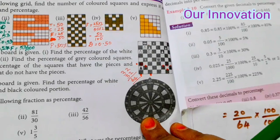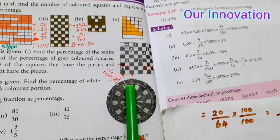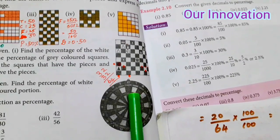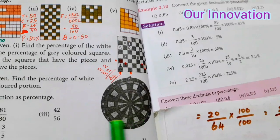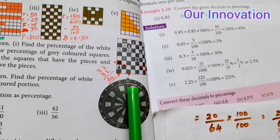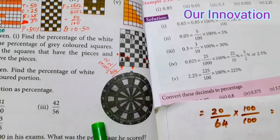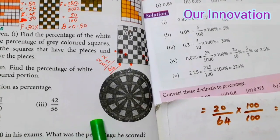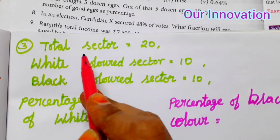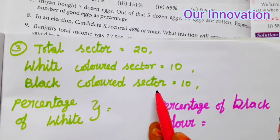This is the picture of the dart board. White and black sectors are given. Total sectors is 20. The white sectors are 1, 2, 3, 4, 5, 6, 7, 8, 9, 10 — so 10 are white. Black sectors are 1, 2, 3, 4, 5, 6, 7, 8, 9, 10 — so black is 10. We need to find the percentage of the white colored portion and black colored portion. Total sectors = 20, white colored sectors = 10, black colored sectors = 10.